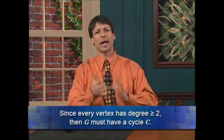Since every vertex has degree at least two, G must have a cycle. Why? Start at a vertex, walk to a new vertex — if you've only entered it once there's always a place to go because its degree is at least two. Walk to a new vertex, and a new vertex, and eventually, since there are only finitely many vertices, you must return to a vertex you've already visited, creating a cycle.